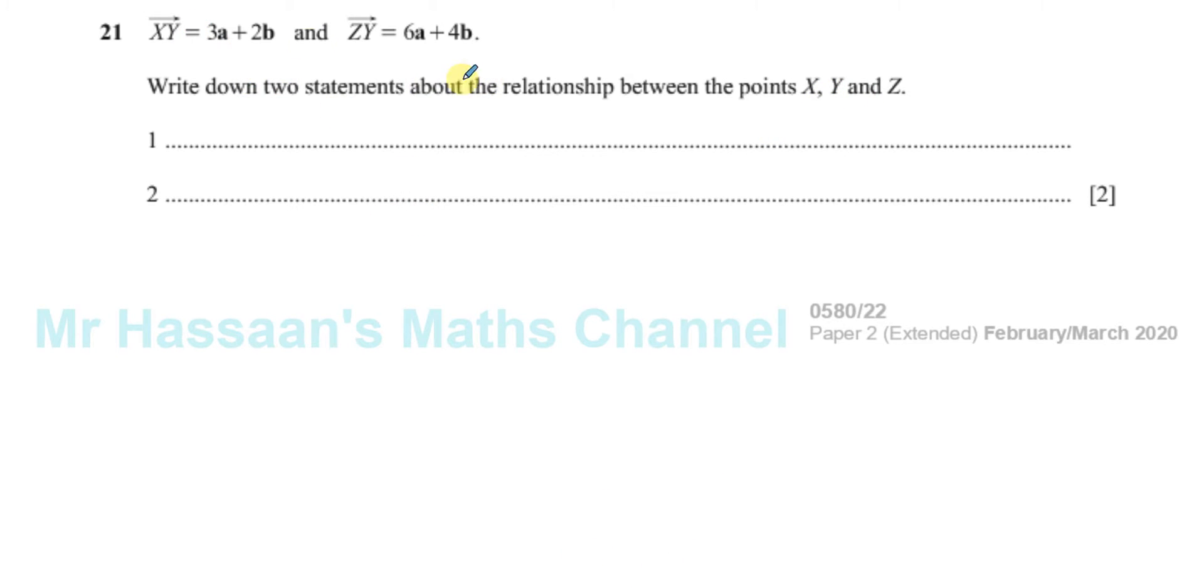So if you look at these vectors carefully, you can see that Z to Y has a common factor of 2. If you take 2 outside, you're left with 3a plus 2b. So you could say that Z to Y is equal to 2 times X to Y, because X to Y is equal to 3a plus 2b.